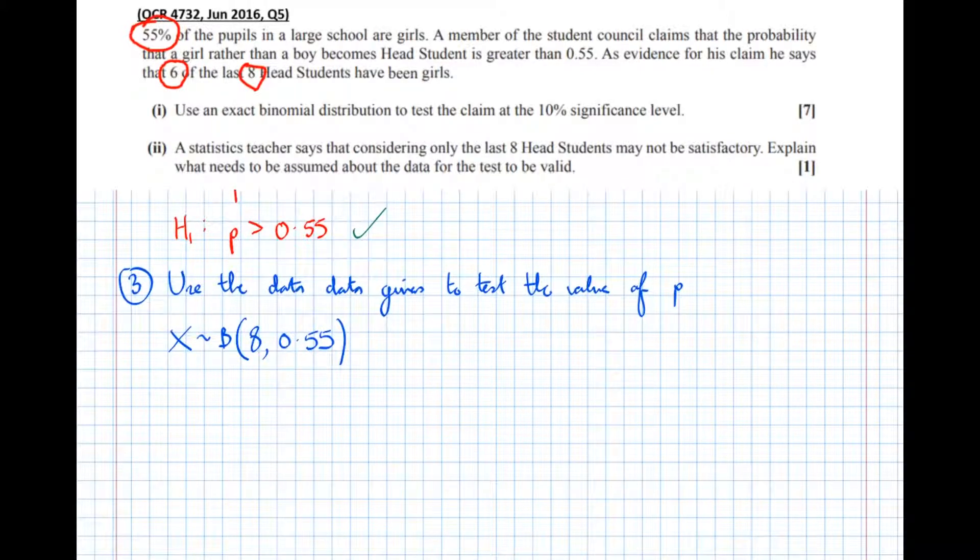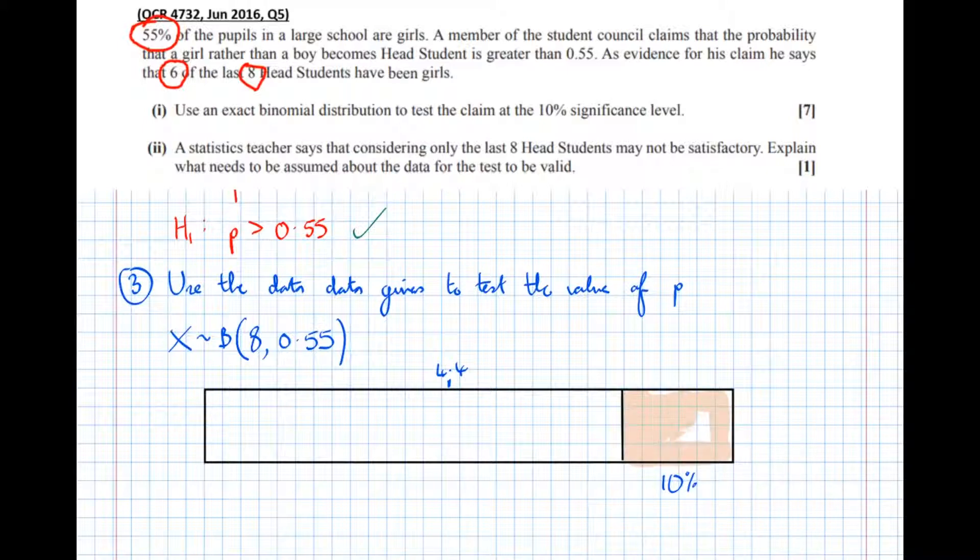To help understand this, it helps to think of probability as being on a sliding scale. Now what we want, we're testing the top end of the scale because we want greater than or equal to. So let's say that 4.4 is roughly in the middle of this scale. So let's put 4.4 there. So something that deviates significantly from 4.4, i.e. lies in this top 10%, will lead us to reject the null hypothesis. Anything that's less likely than 10% to have happened will lead to a rejection.